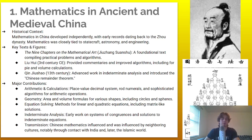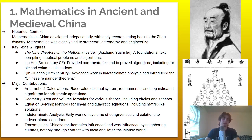Also, area and volume formulas for various shapes including circles and spheres, methods for linear and quadratic equations including matrix-like solutions, and early work on systems of congruence and solutions to indeterminate equations. Chinese mathematics influenced and was influenced by neighboring cultures, notably through contact with India and later the Islamic world.